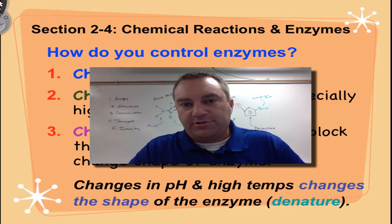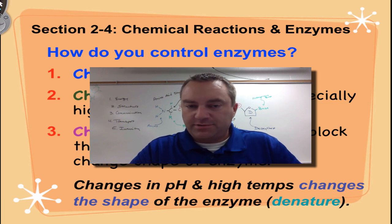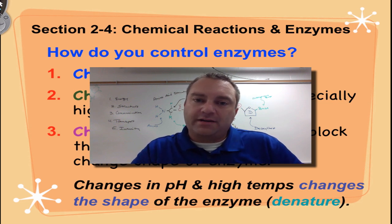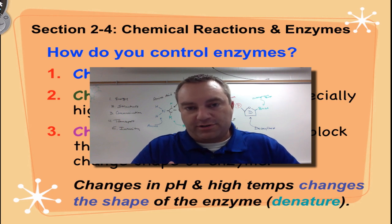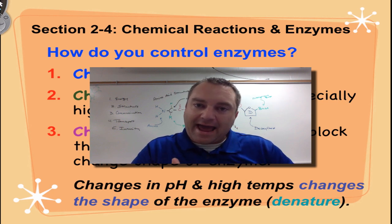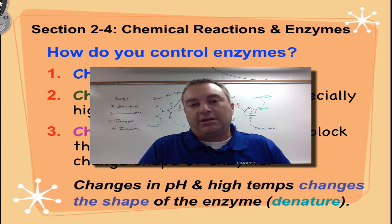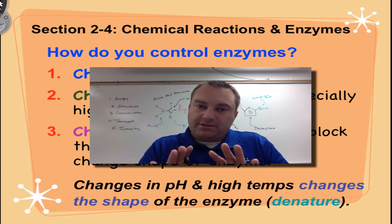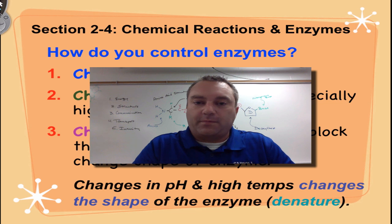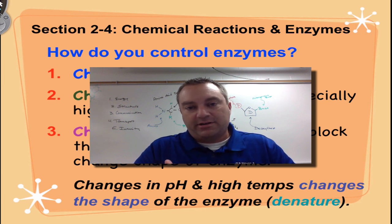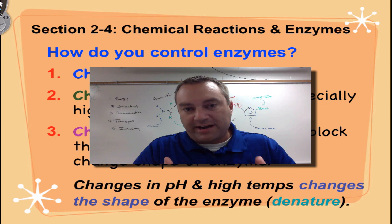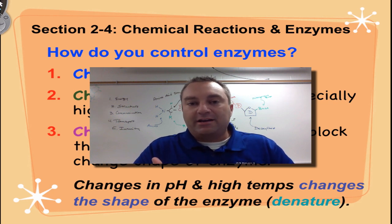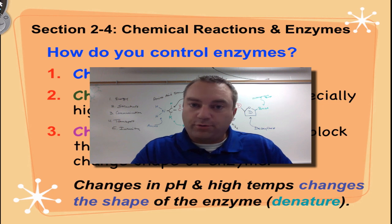Welcome to our final episode from Chapter 2D, Chemical Reactions and Enzymes. In this episode, we're going to talk about how enzymes are controlled. I want you to review from the previous screencast that enzymes are proteins that act as a catalyst. Catalysts are chemicals that speed up a chemical reaction by lowering the activation energy — the amount of energy used to get the reaction started. By far, acting as a catalyst is the most important job that proteins do.